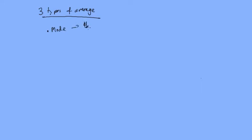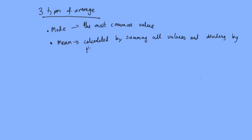The mode is the most common value, and the mean, which is what we traditionally think of as being the average, is calculated by summing all values and dividing by the number of values.